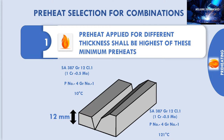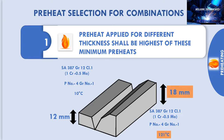Part 2 is the same: P No. 4, Group No. 1, S387, Grade 12, Class 1 — 1 chrome 1.5 moly of 18 mm thickness, and the minimum preheat is 121 degree Celsius. So how to select the preheat temperature for this combination? 18 mm thickness is higher than 12 mm, so the preheat temperature shall be 121 degree Celsius for the higher thickness of 18 mm.